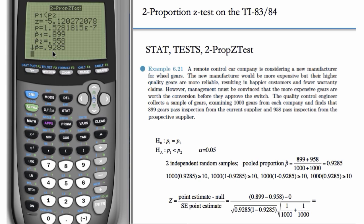So, what's our conclusion? Our p-value is much less than alpha, so we reject H₀. We have evidence that the prospective supplier has a higher true pass inspection rate than the current supplier. So, we should go with the prospective supplier.